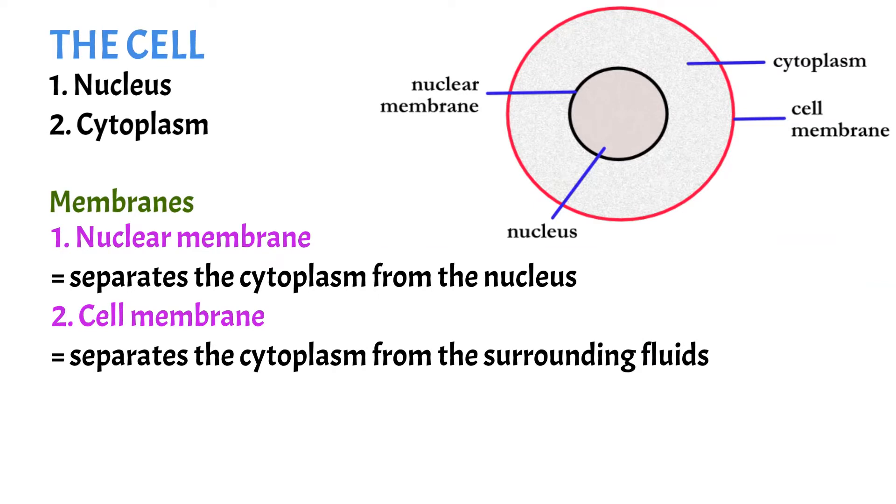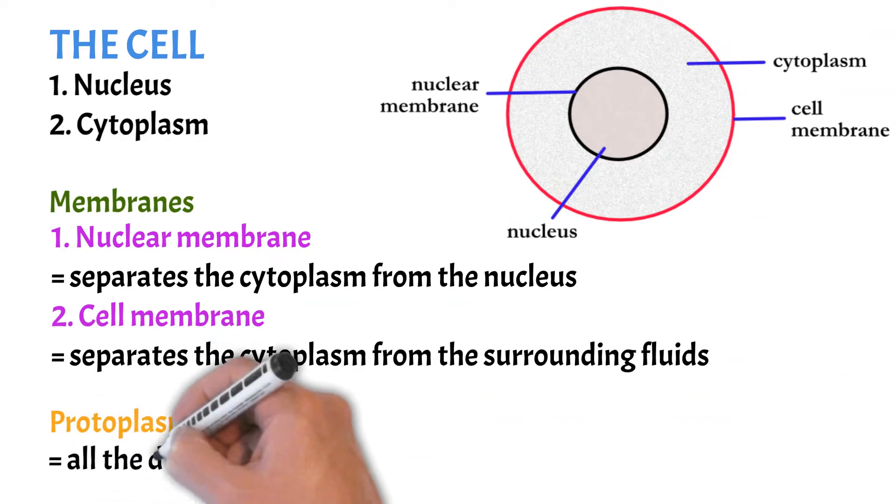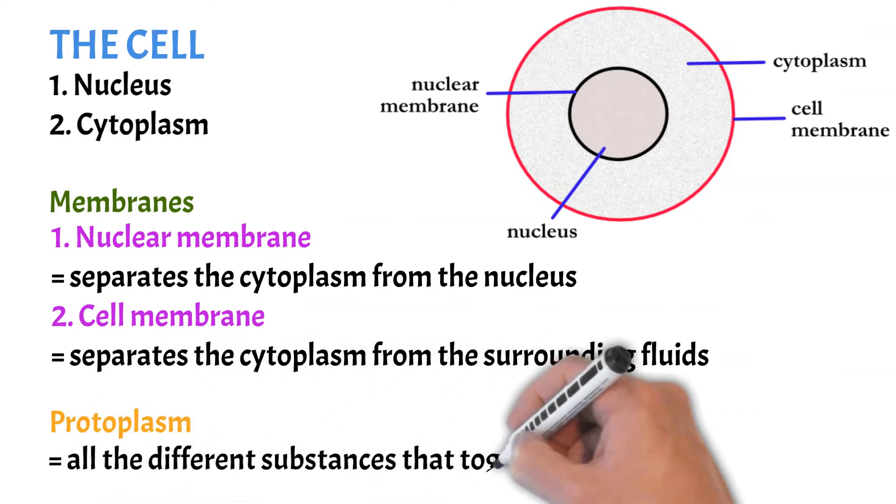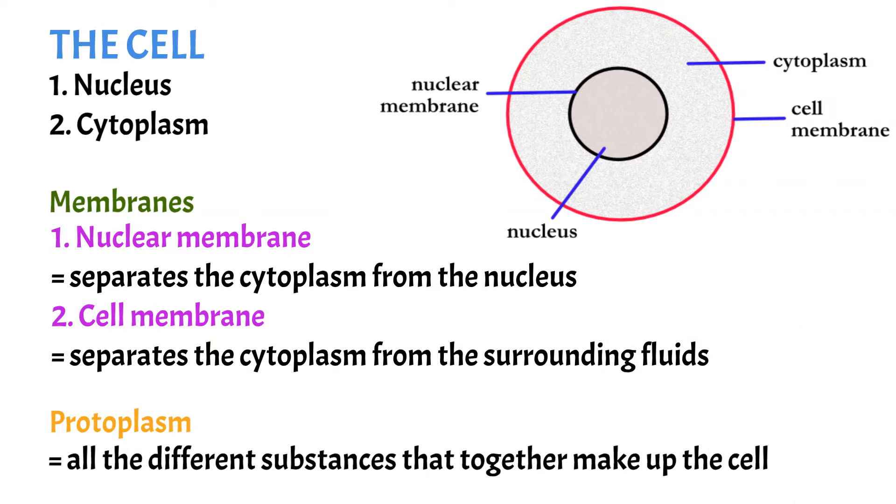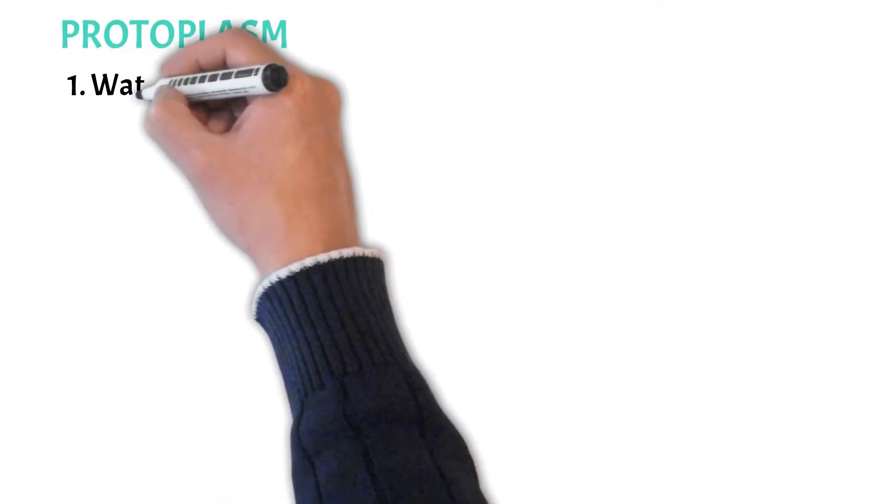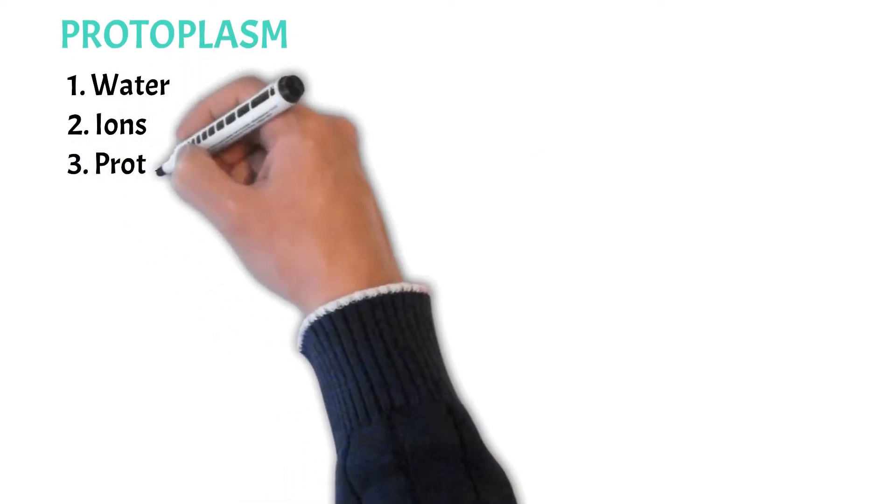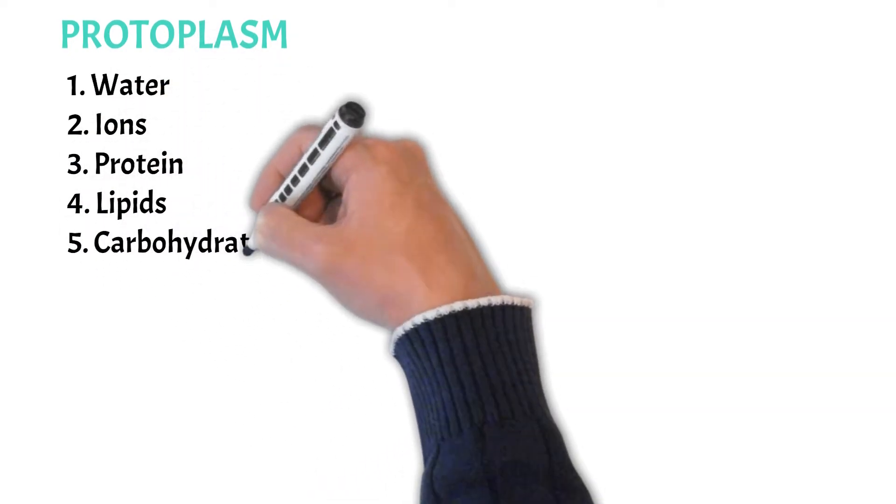There's one more term that we need to understand and that's protoplasm. Protoplasm is basically all the different substances which together make up the cell. And there are five basic ones: water, electrolytes, proteins, lipids and carbohydrates.